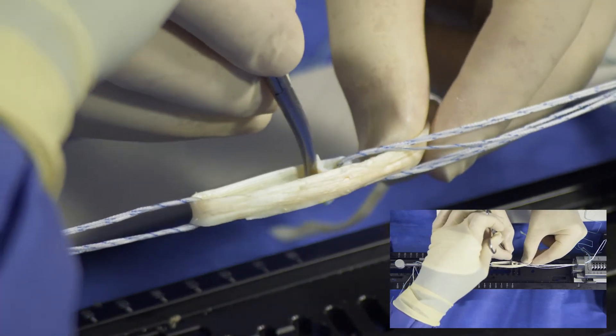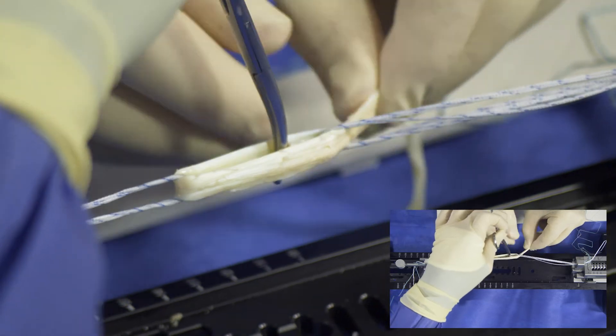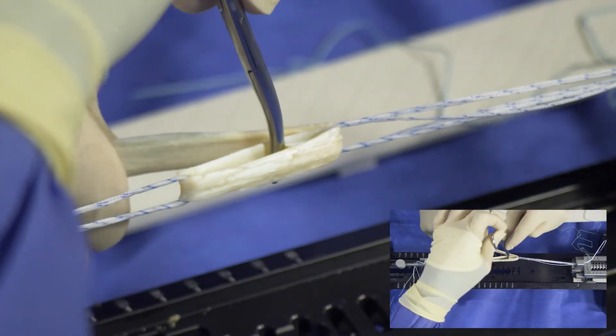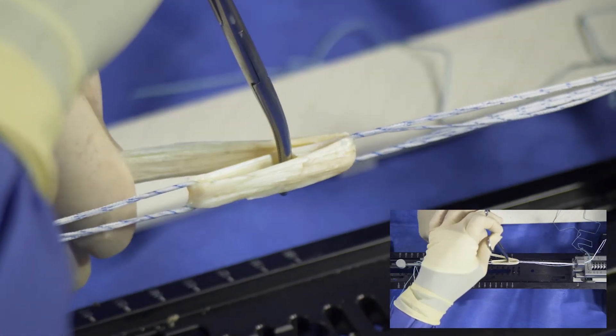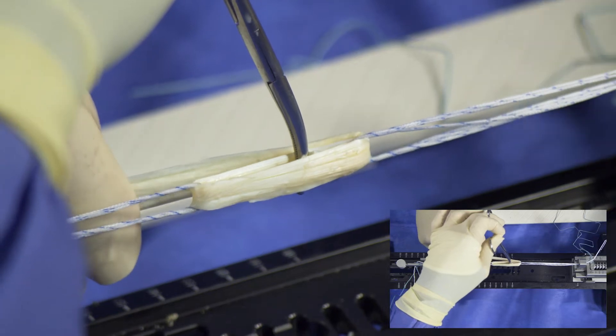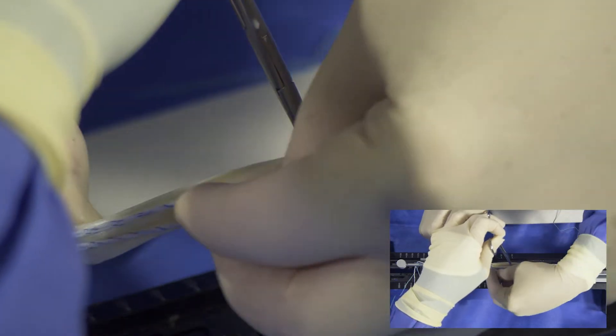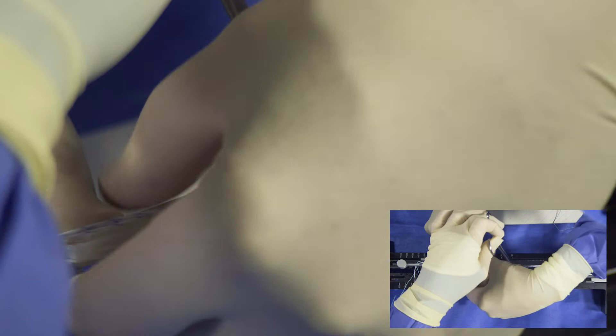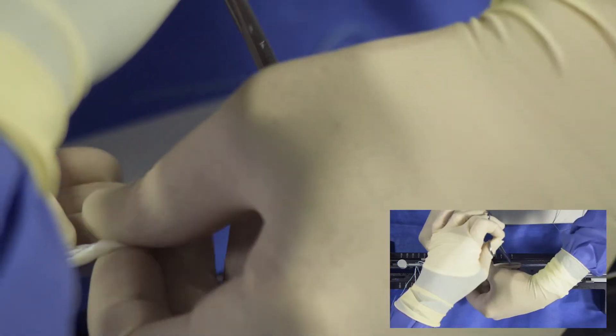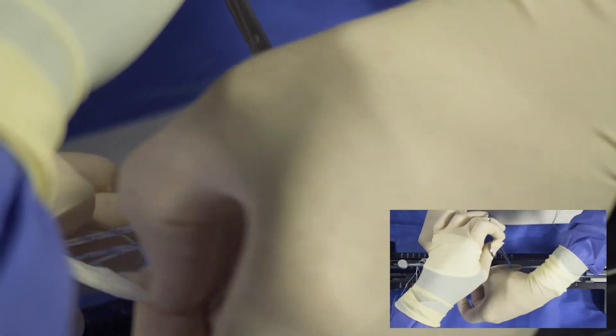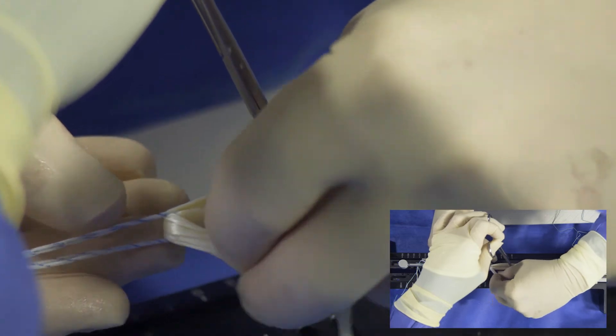Our goal is to have a continuous loop of tendon, four strands, that overlaps at its beginning and end by about 12 to 15 millimeters. Typically, the graft length for someone five feet tall would be in the 56 millimeter range and someone six foot two, 70 millimeters.